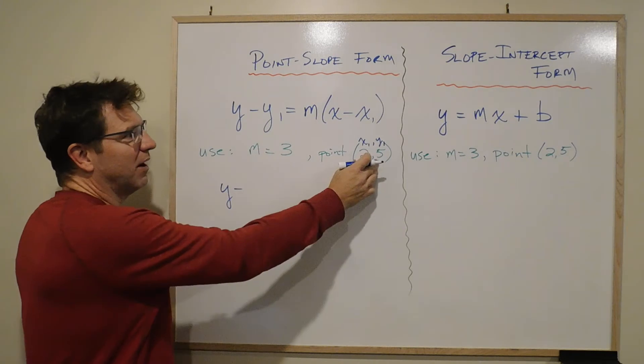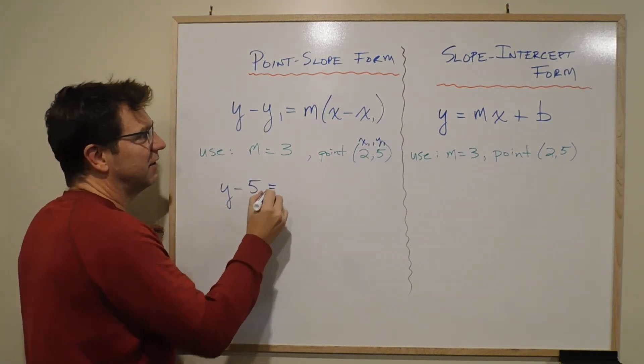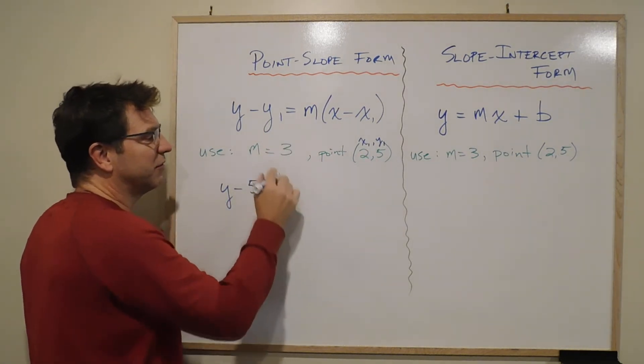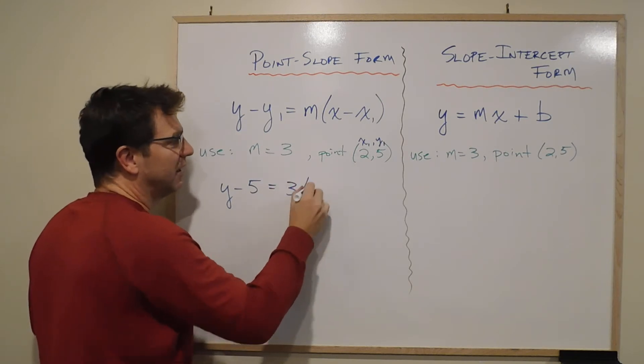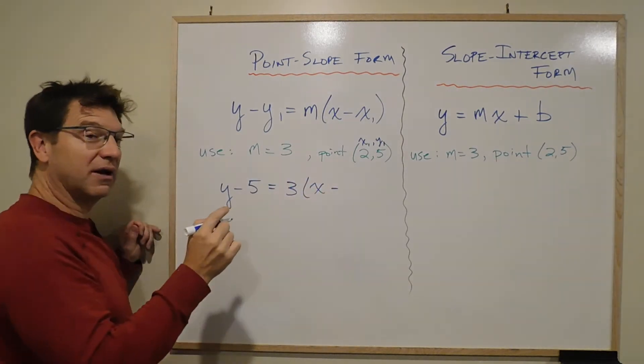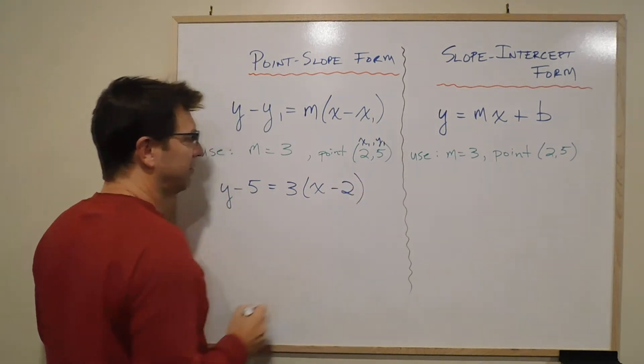y minus y1, which is 5, equals, well, the m, the slope, is 3. x minus x1. x1 is 2, right? And you do that.